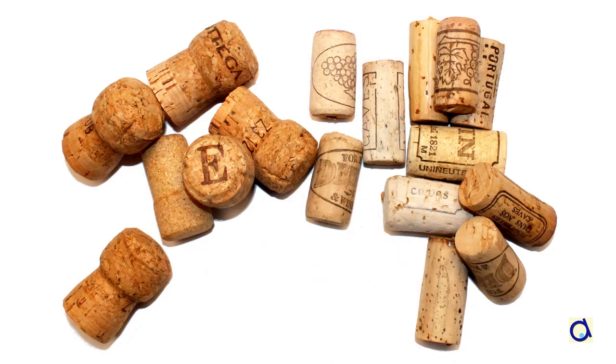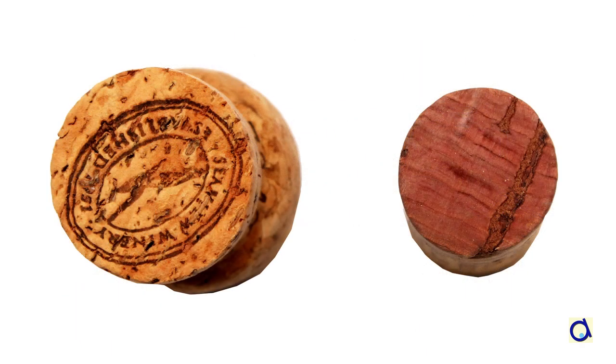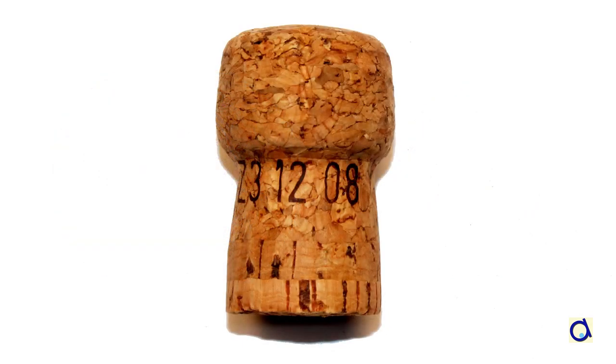Use corks from wine or sparkling wine bottles as a base for making the printing stamps. Sparkling wine corks are wider and therefore allow larger patterns, and their shape makes it easy for children to hold them.